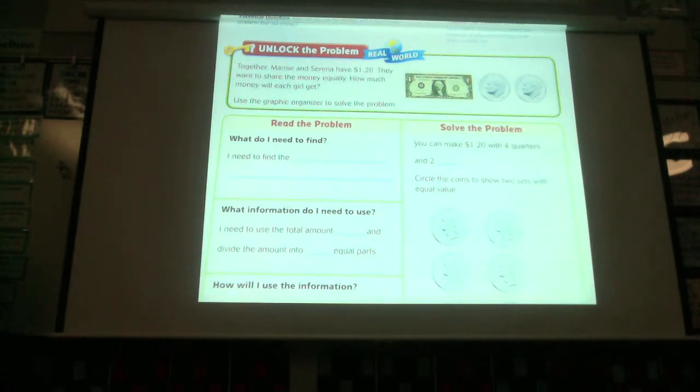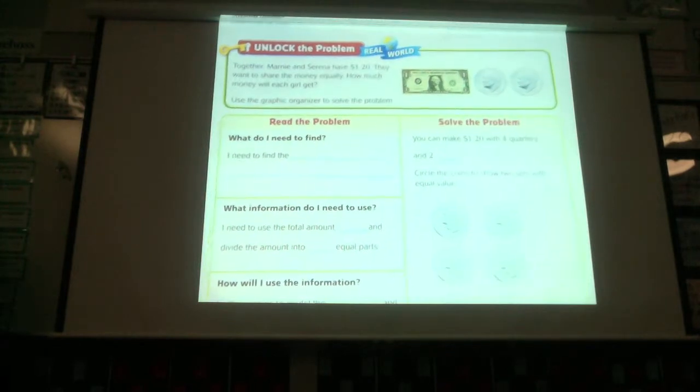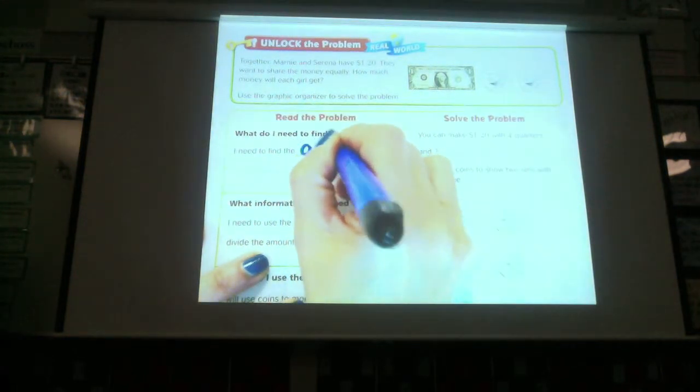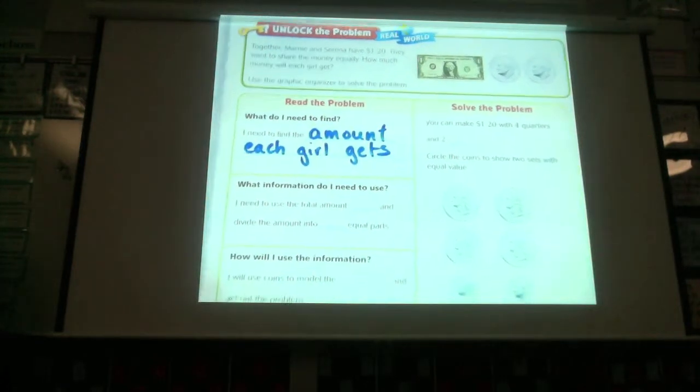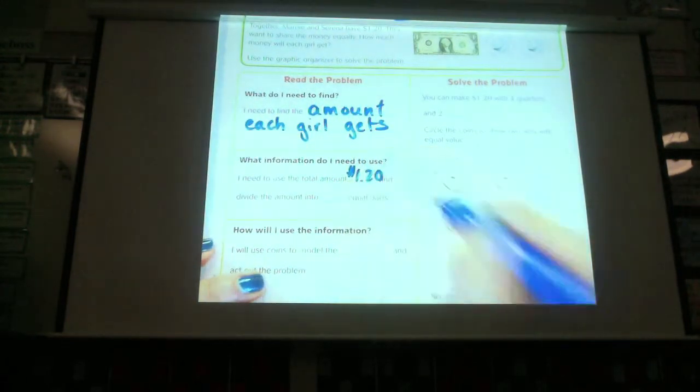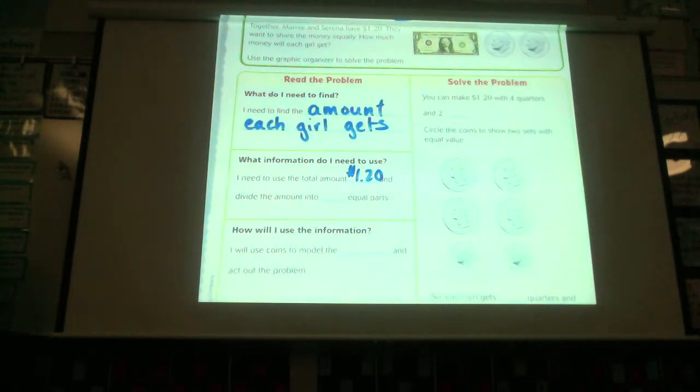Tell me if you noticed something familiar about this problem. Together, Marnie and Serena have $1.20. They want to share the money equally. How much money will each girl get? Does this look familiar to you guys? Yes. Yes, it does. So, we already know what our answer is, but let's go ahead, and if this was a new problem we were doing on our own, the things that you would want to look at. What do I need to find out? We need to find out, who can tell me in their words, what do we need to find out? Okay, so we're going to find out the amount. Go ahead and write with me. Amount each girl gets, right? What information do we need to use? We need the total amount, which was how much? $1.20. $1.20. And divide it into how many equal parts? Two.